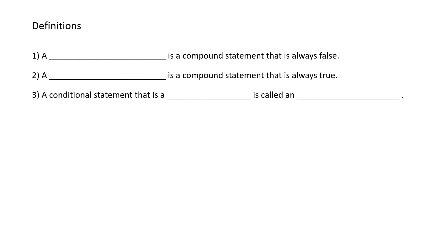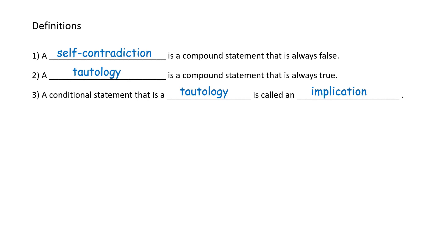Let's get some more definitions. A self-contradiction is a compound statement that is always false. A tautology is a compound statement that is always true. And a conditional statement that is a tautology is called an implication.